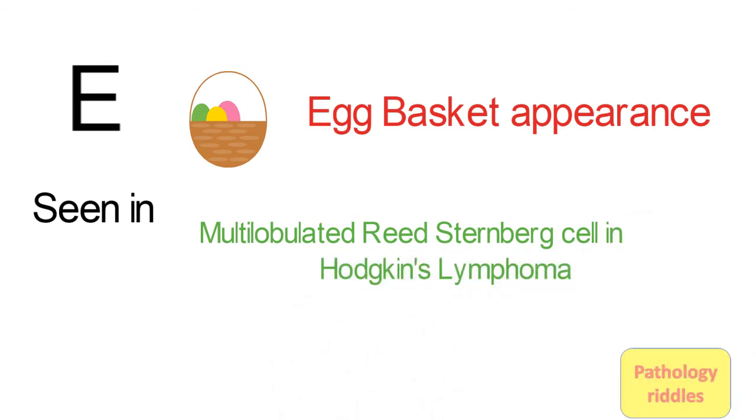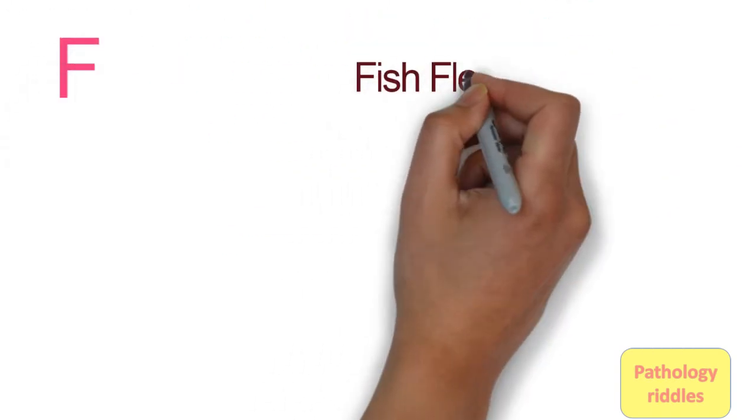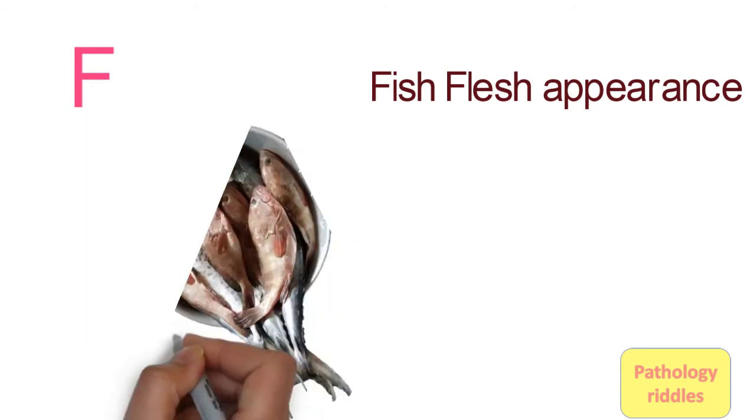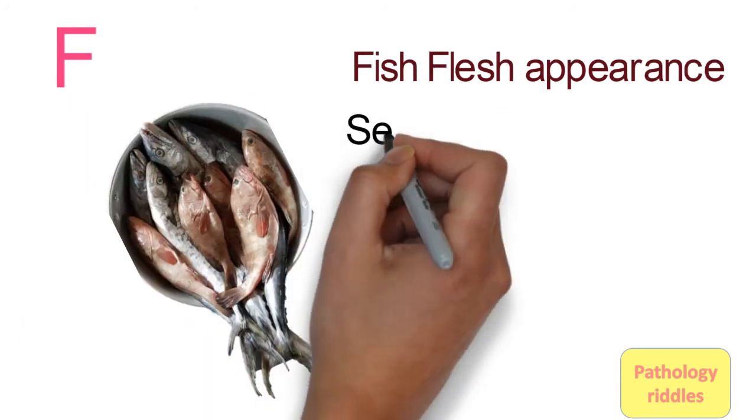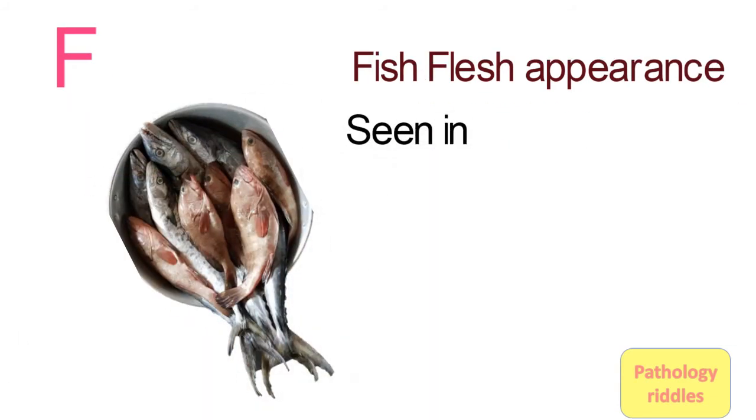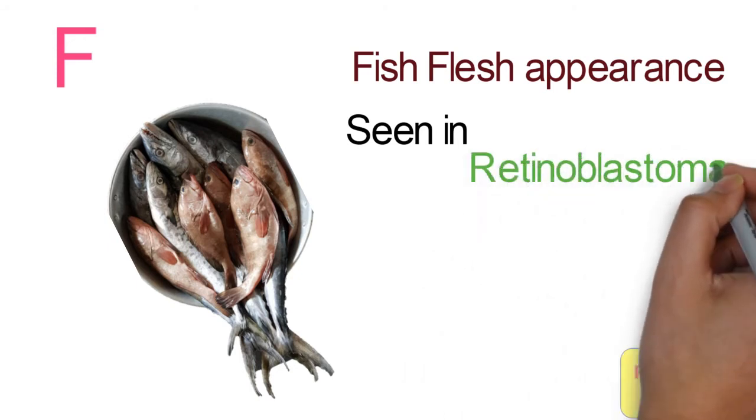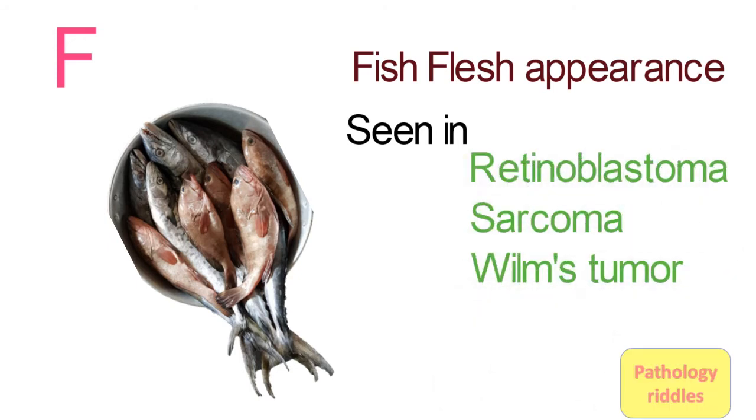F is for fish flesh appearance. When we see the gross cut surface of lymphomas, retinoblastoma, Wilms tumor, and sarcomas, we can see a tan, pale tan, or white-gray color. This gives the appearance of fish flesh, hence the name.